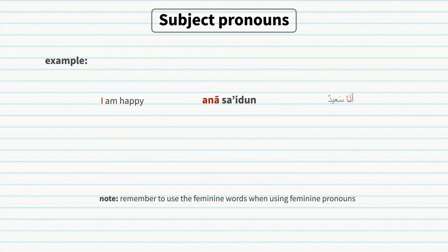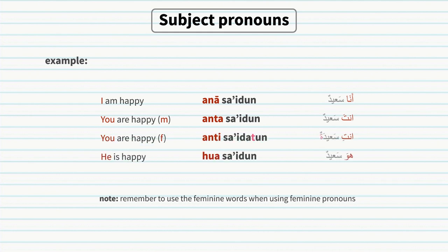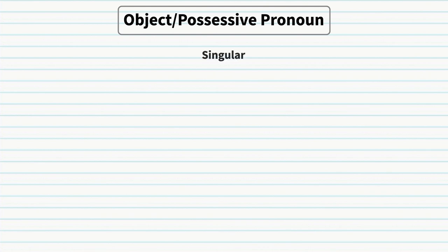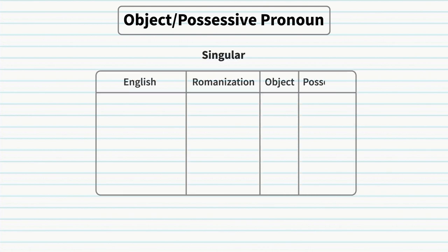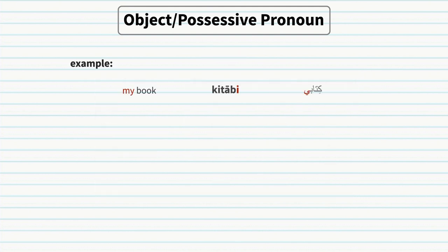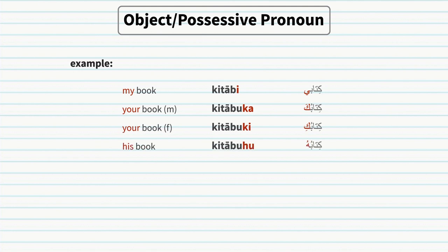More pronoun examples: ana sa'id (I am happy), anta sa'id (you are happy, masculine), anti sa'ida (you are happy, feminine), huwa sa'id (he is happy), hiya sa'ida (she is happy). These are also the object and possessive pronouns in Arabic: kitabi (my book), kitabuka (your book, masculine), kitabuki (your book, feminine), kitabuhu (his book), kitabuha (her book).